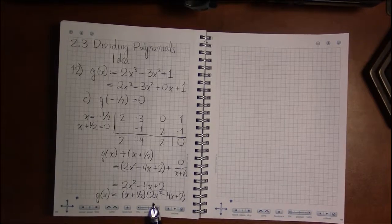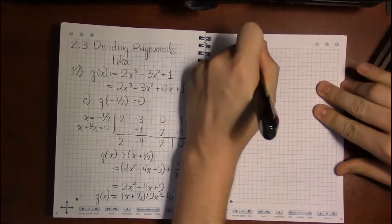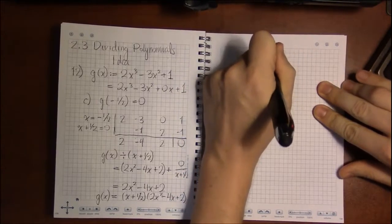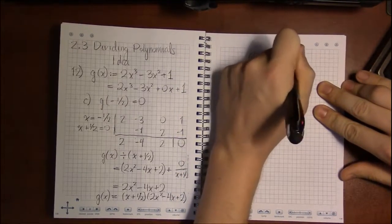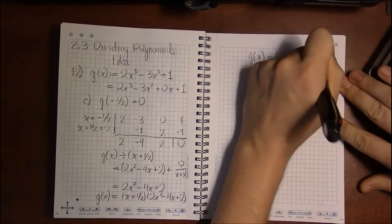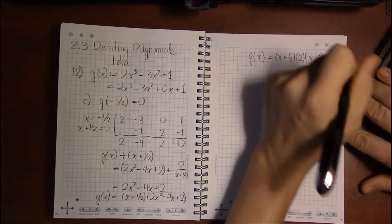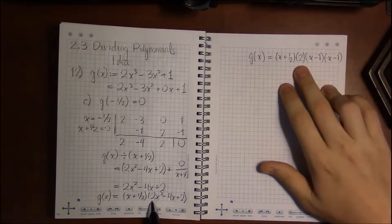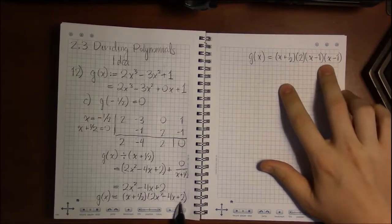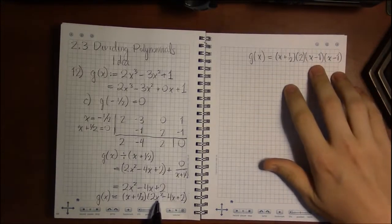And I think you'll find that if you work with this a bit, that g of x is going to be equal to x plus 1 half times 2 times x minus 1 half times x minus 1. All I'm doing here is I'm factoring out the 2 and then noticing that what's left will actually factor. Or if you want to, you can use quadratic formula.